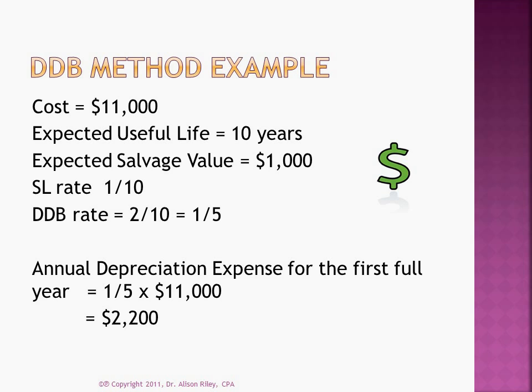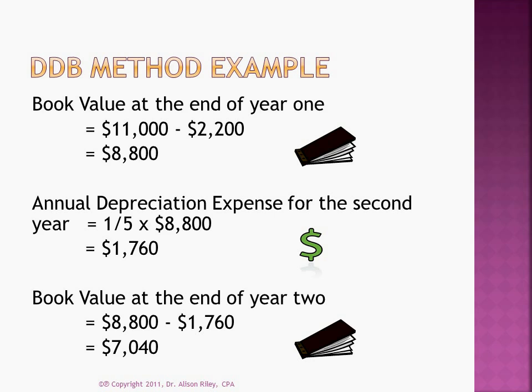Let's see how our earlier example would change if we had used the double declining balance depreciation method instead. Since the asset is a 10-year asset, the straight line rate is 1/10th and the double declining balance rate is 1/5th. The book value at the beginning of the first year is its cost, $11,000. So we multiply $11,000 by 1/5th, or 20%. The result is $2,200, and this is the depreciation expense for the first full year. The book value at the end of the first year will then be $11,000 minus $2,200, or $8,800.